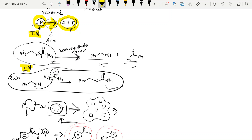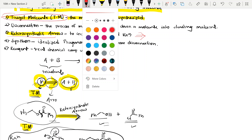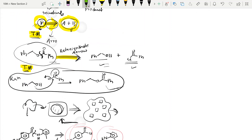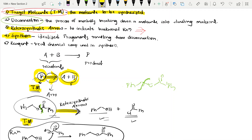Disconnection is the process of mentally breaking a bond in the target molecule — for example, breaking Ph-CH2-O-CO-Ph gives the disconnection arrow. It is the process of mentally breaking down a molecule into starting materials. Synthons are the idealized fragments resulting from disconnection — they are the same as intermediates in common chemistry, but in retrosynthesis we call them synthons.